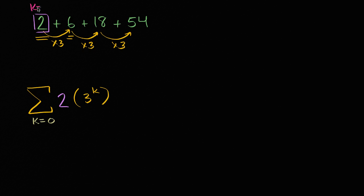So this is k equals zero. This is k equals one. This is k equals two, and then this would be k equals three, which would be two times three to the third power. So two times 27 is indeed equal to 54. So we're going to go up to k equals three. So that's one way that we could write this.